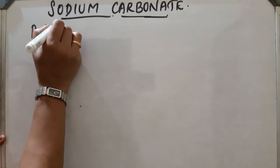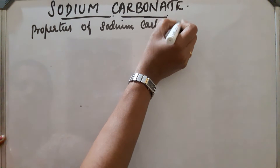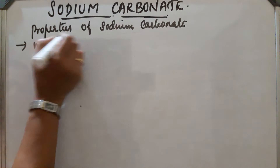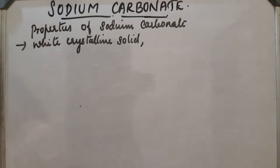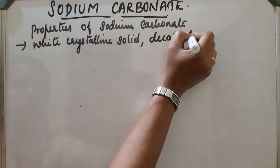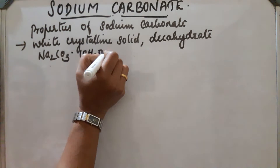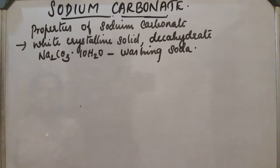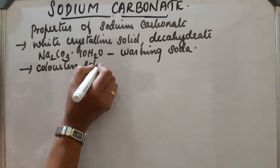Properties of sodium carbonate: First, sodium carbonate is a white crystalline solid. It exists as a decahydrate, Na2CO3·10H2O, which is called washing soda. Washing soda is a colorless solid and is soluble in water.